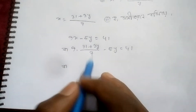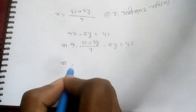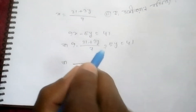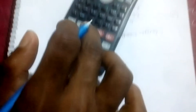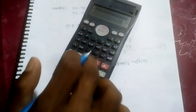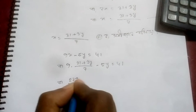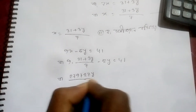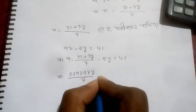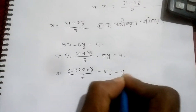9x minus 4y. I can see 3x minus 5y. 2x minus 2. 7, 9 plus 39 equals to 46. I can see 7x minus 5y equals to 42.